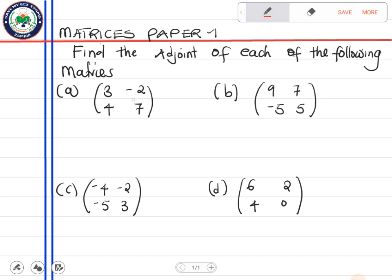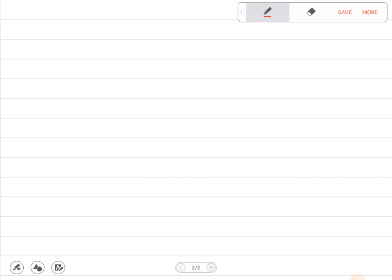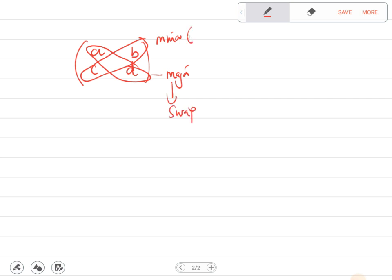The major diagonal, these elements here. If you have got a, b, c, and d as elements, these elements here are major diagonal elements. And these here are minor diagonal elements. So the elements in the major, you swap them. While the elements in the minor, you change their sign.